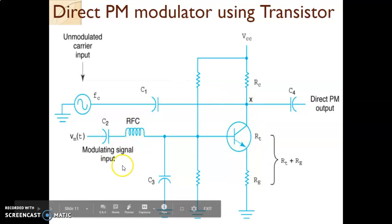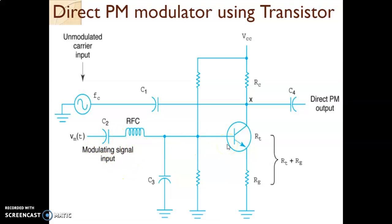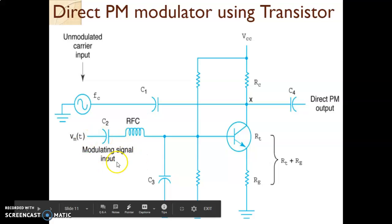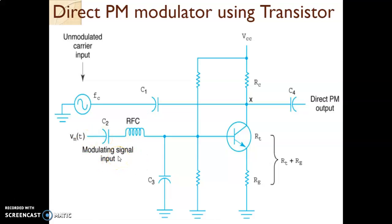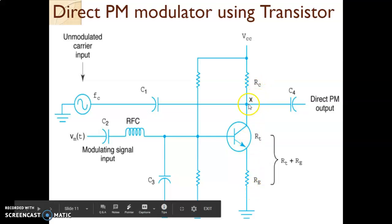What will happen when the modulating signal is applied? When the modulating signal is applied, the transistor will conduct according to this modulating signal because the modulating signal is going to change base-to-emitter voltage VBE. According to that, IC will change because the transistor is a current control device. When VBE changes, IB changes, because of that IC will change, and because of that the current flowing through this branch is going to change.